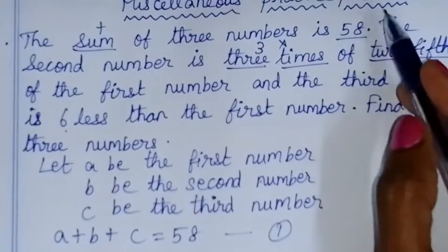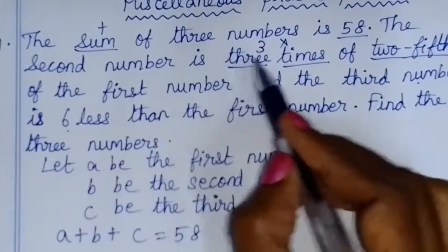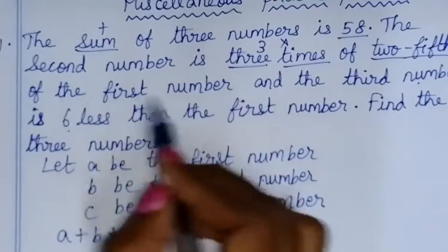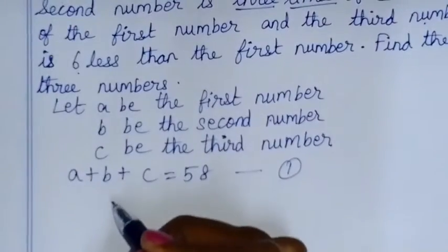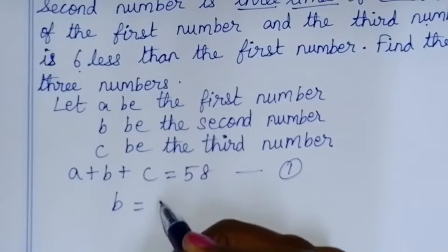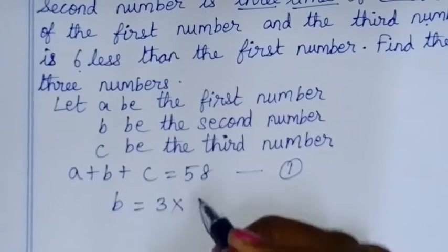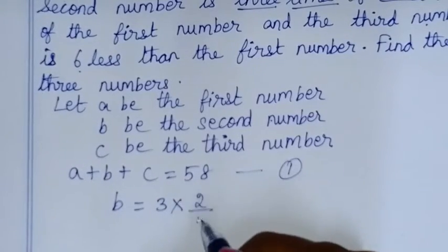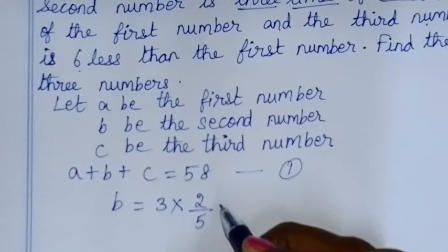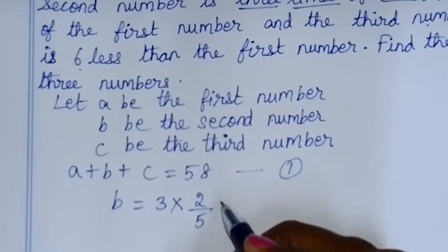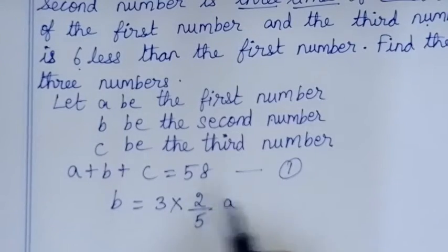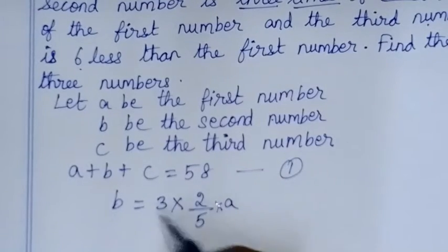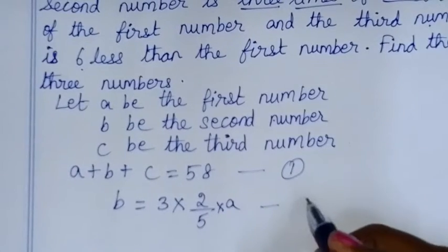Second equation: the second number is 3 times of 2 fifths of the first number. Second number is B. So B is equal to 3 times of 2 fifths of A. This is our second equation.